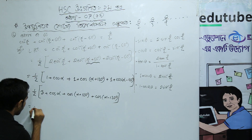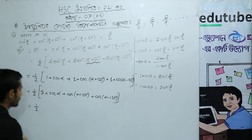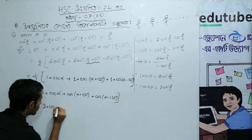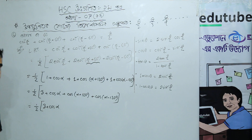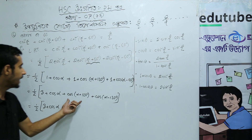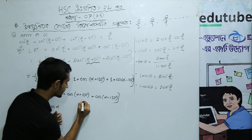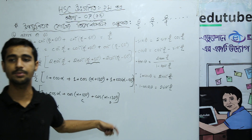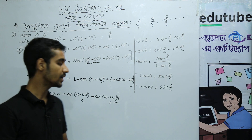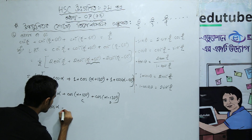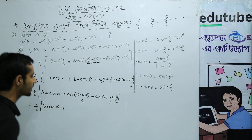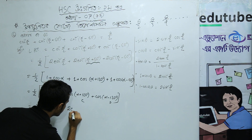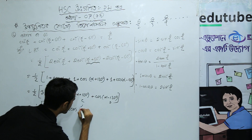Now, it is equal to half of: 3 plus cos alpha plus cos(alpha + 120°) plus cos(alpha − 120°). Applying the sum-to-product formula: cos C plus cos D equals 2 cos((C+D)/2) cos((C−D)/2).